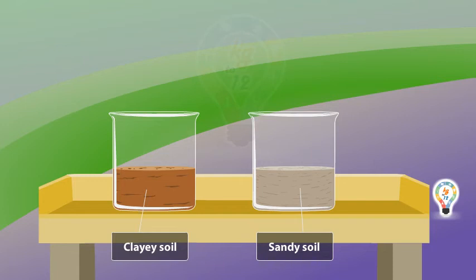Clay soil on the other hand contains fine soil particles that stick to each other. Its ability to retain water is much higher than that of the other soil types.